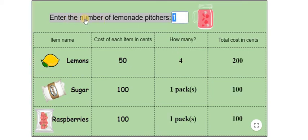There you go. We have entered the number of lemonade pitchers as one. How many lemons do we need? We need four lemons, and the total cost of these lemons is 200 cents.